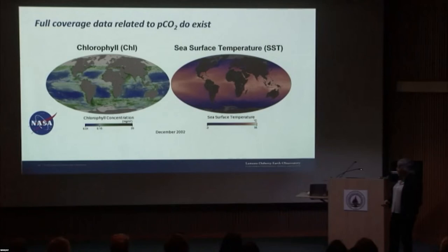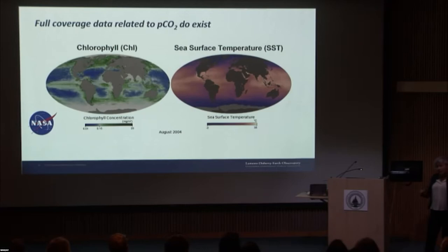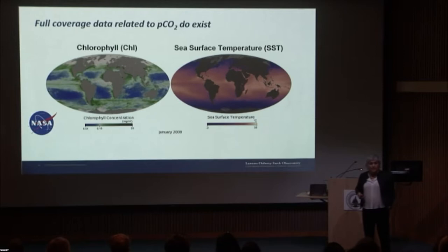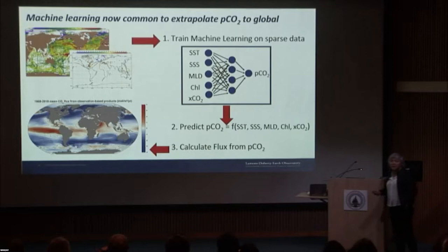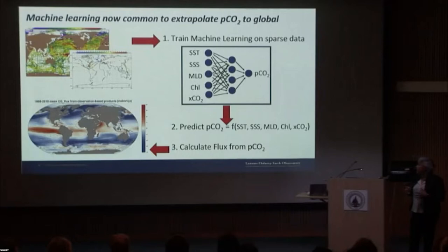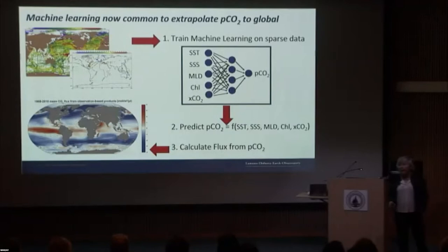Luckily, we have full-coverage data such as chlorophyll and SST from satellites, and these data are related to pCO2. People have realized over the last decade that we can build statistical algorithms — particularly using machine learning — based on where we have pCO2 data and these complementary full-coverage driver data. You train your algorithm on where all the data exists, then predict pCO2 at all points based on your full-coverage driver data, and from that calculate the flux.